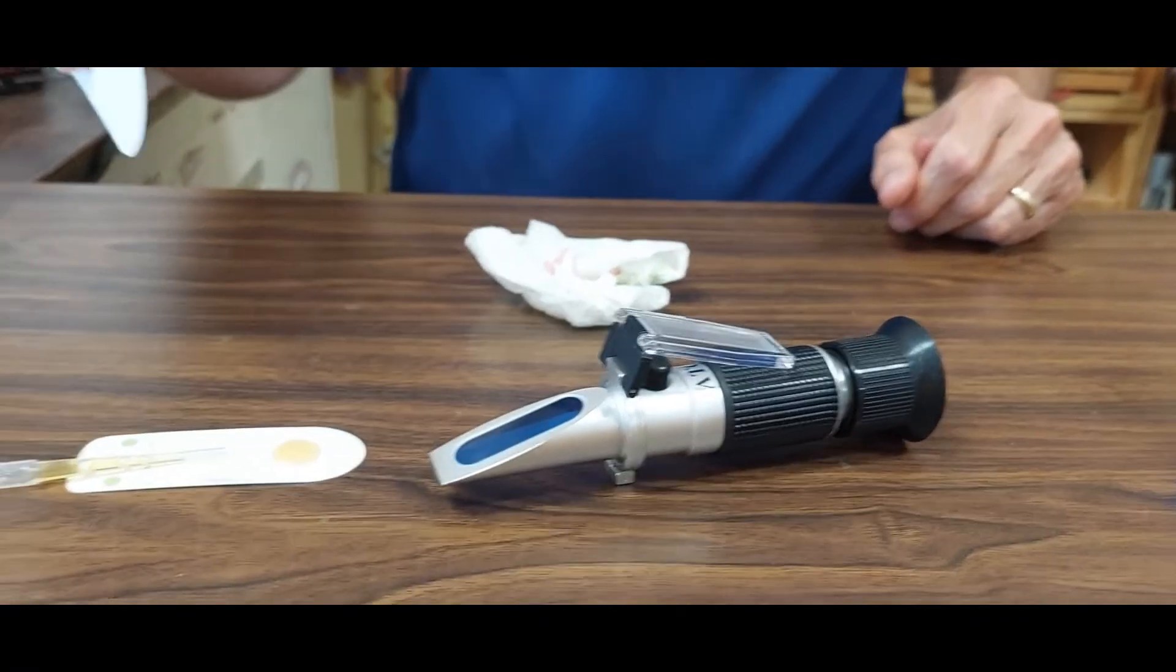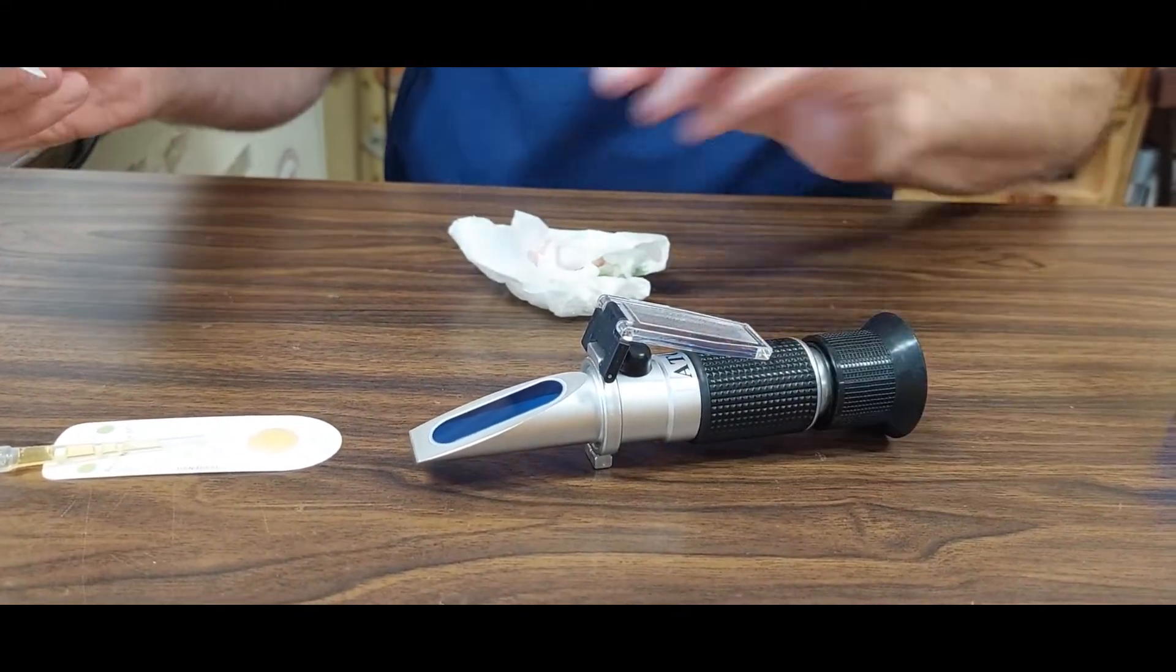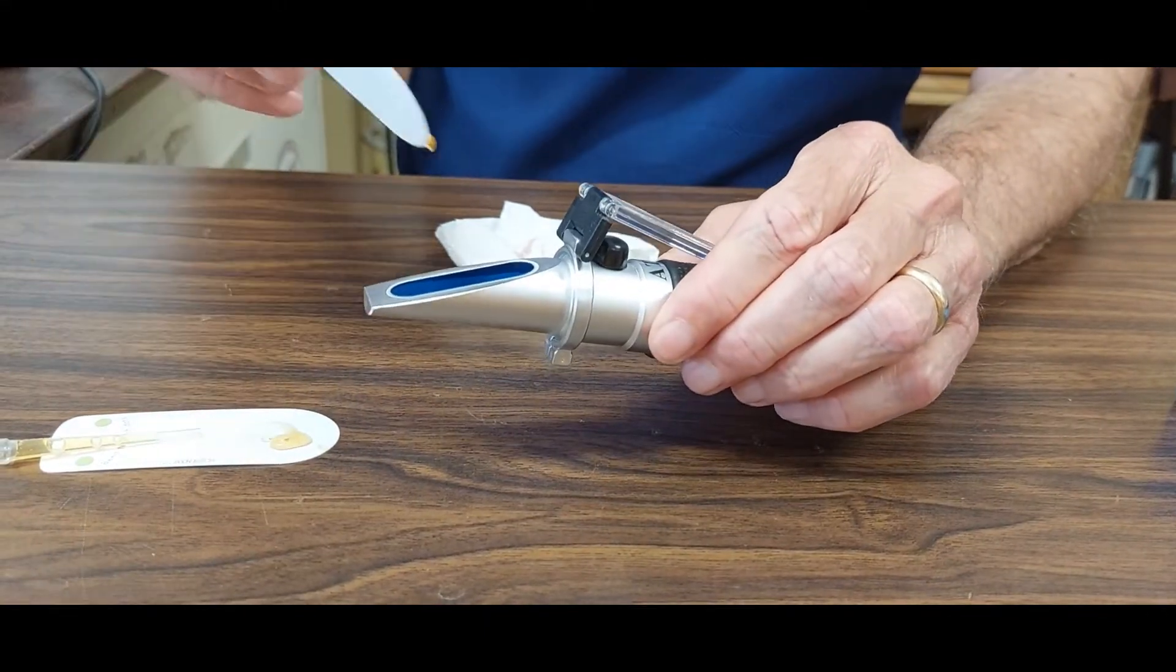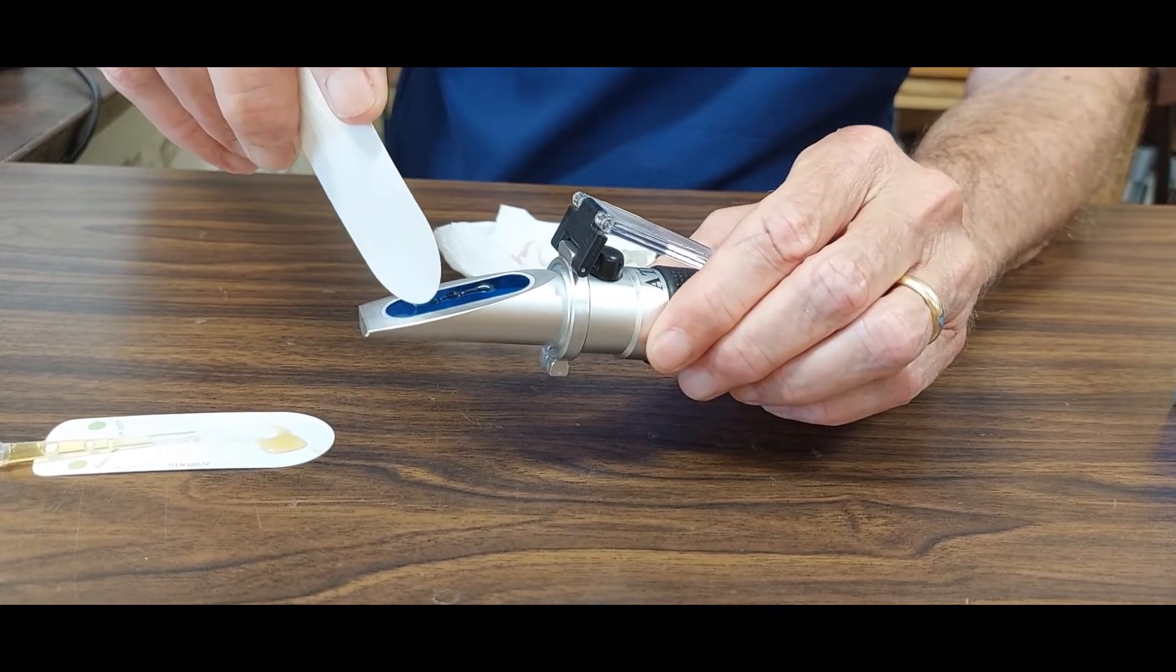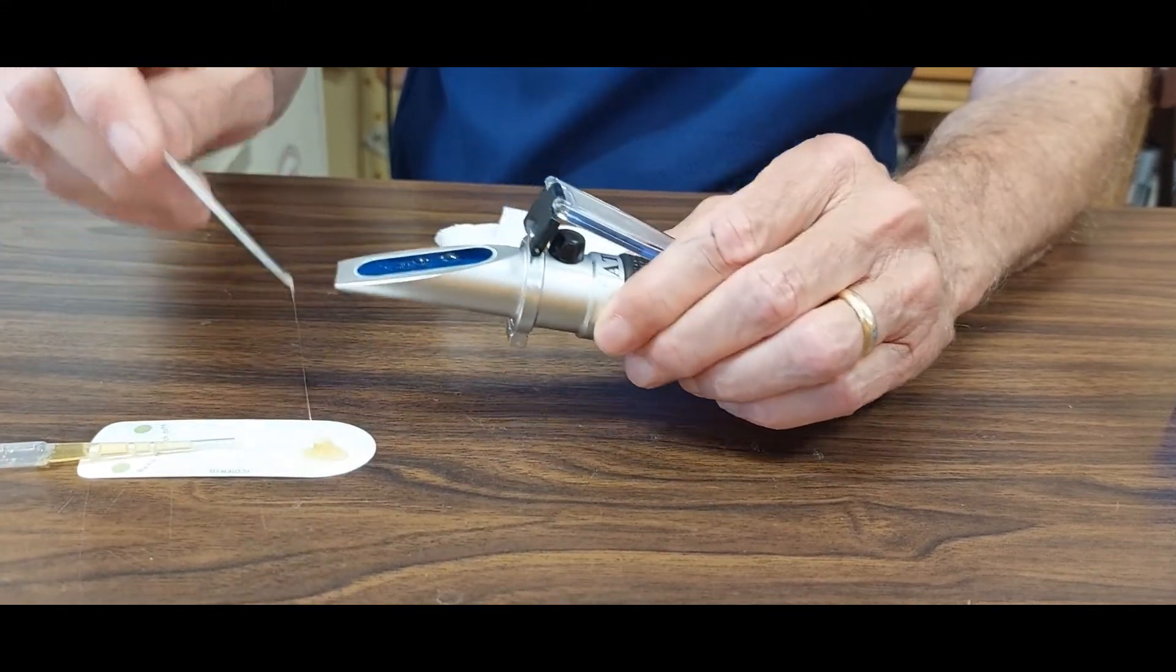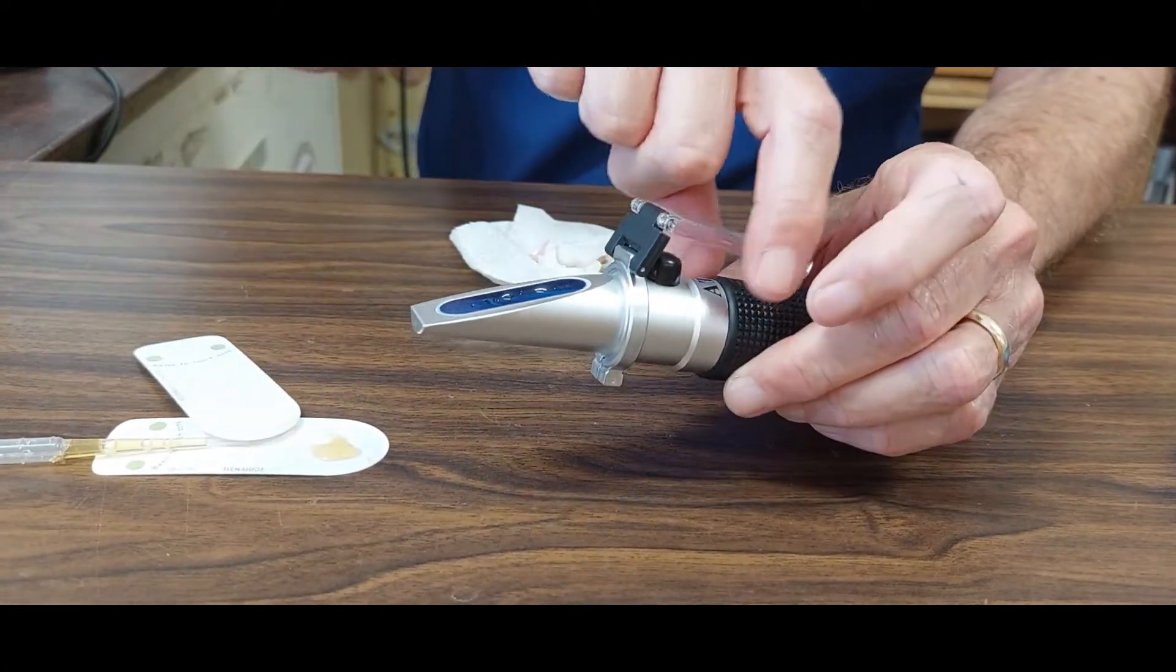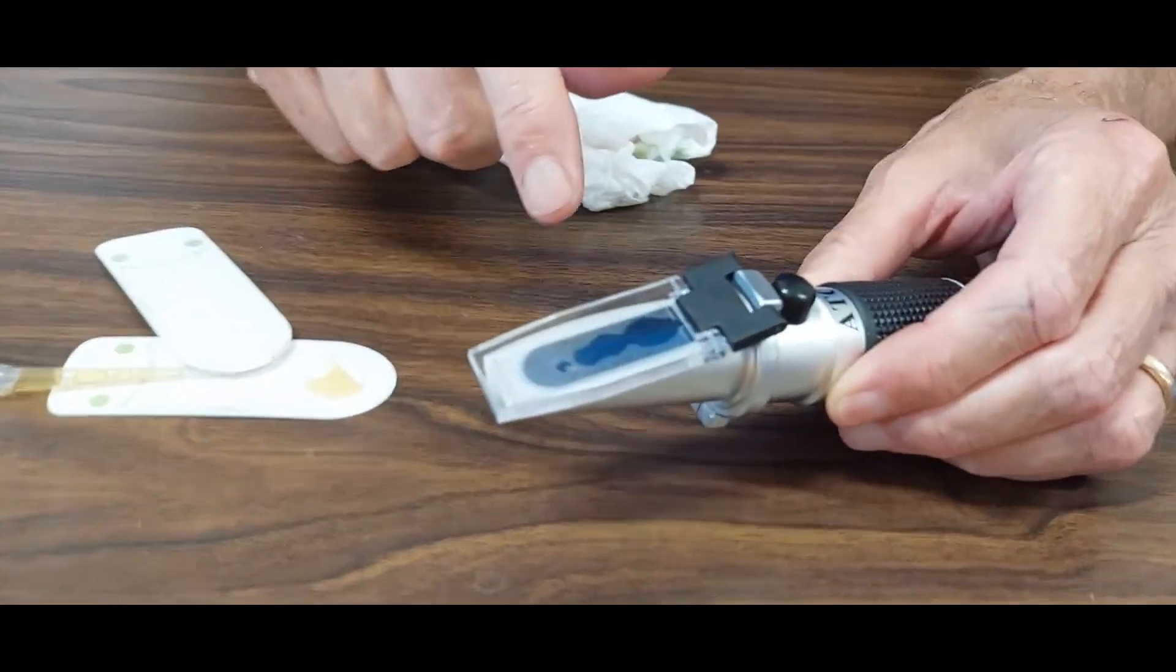Since the pipette did not work too well on getting the honey onto the refractometer, I'm going to try plan B, and that's just to take some honey up here, and just dab it. And it really doesn't take as much as you would think. This may be enough right there, and I'll see when I close it up.